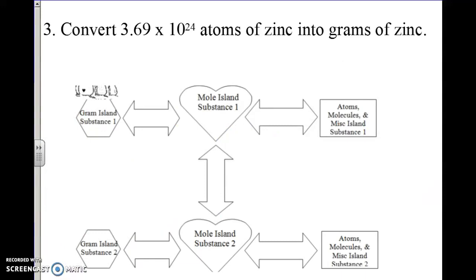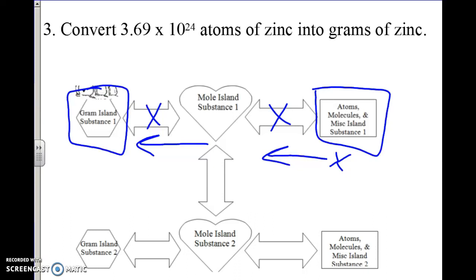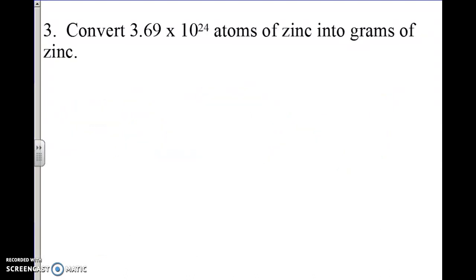In this next problem, question number 3, we're going to start at atom island and go over to grams of zinc — a significantly easier problem than the last one. We'll start at atoms, work our way over to moles, then from moles work our way over to grams. Each bridge is a multiplication sign, so we'd expect 2 multiplication signs in this problem. They give us 3.69 times 10 to the 24th atoms of zinc.